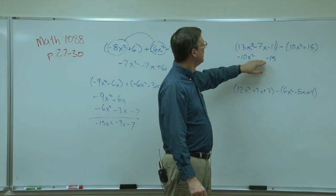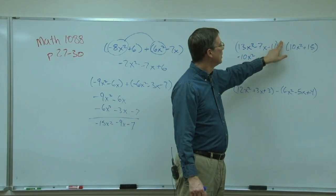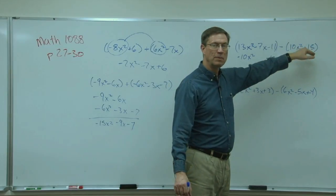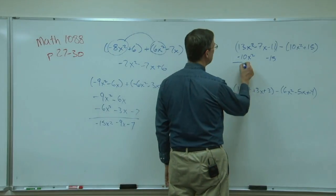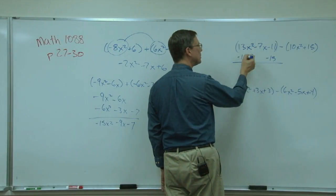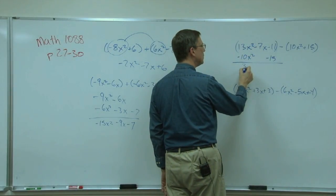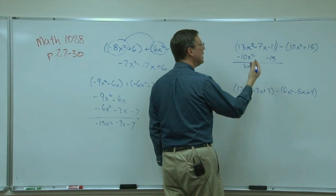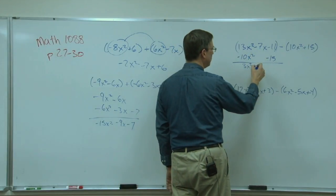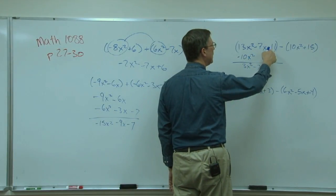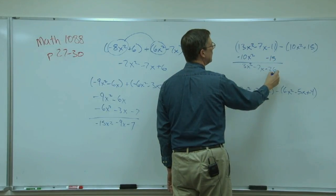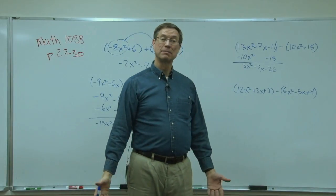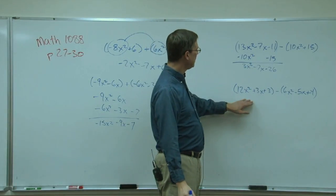So there is no like term with the 7x. This negative though, in a sense, got distributed to both of those. Now I'm going to add. So now I add and keep the common signs: 13x² + -10x² is 3x². Just bring the 7x down, and now I can add -11 + -15 = -26. And that one's done.